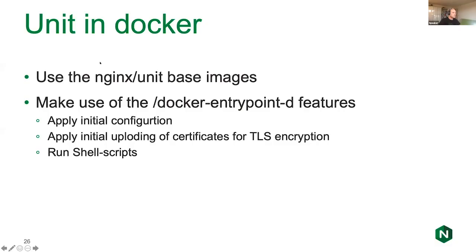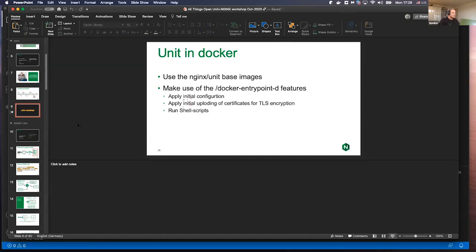The Docker approach has a cool feature: a directory called docker-entrypoint.d inside the nginx unit base images. You can place a JSON file there and it will be applied as the default configuration automatically. Any PEM file placed there will be uploaded into the certificate section. And if you place a shell script there, nginx unit will run it right after configuring the instance or uploading certificates.